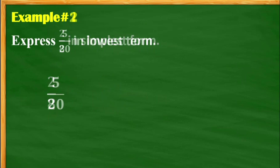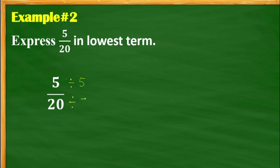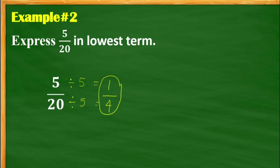Let's have another example. The numerator is 5 and the denominator is 20. 5 and 20 have a common factor. The common factor of 5 and 20 is 5. 5 divided by 5, the answer is 1. 20 divided by 5, the answer is 4. So the final answer is 1 fourth. That's very easy.